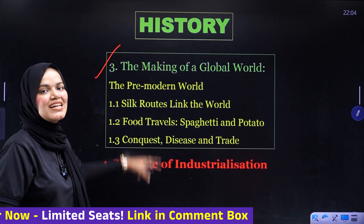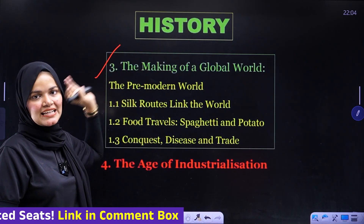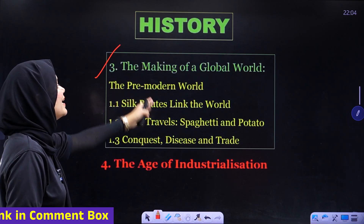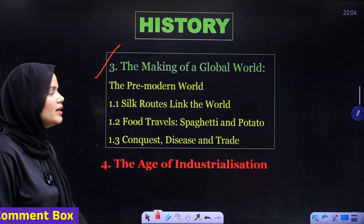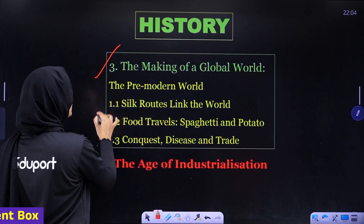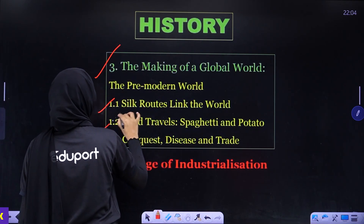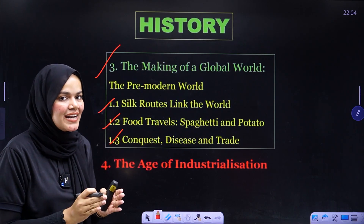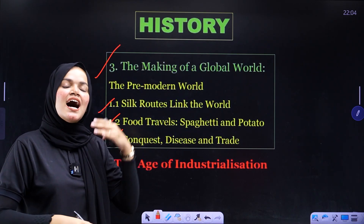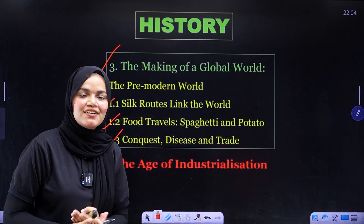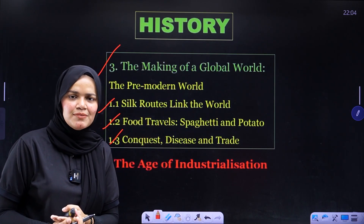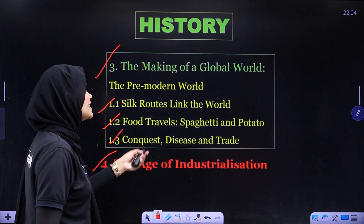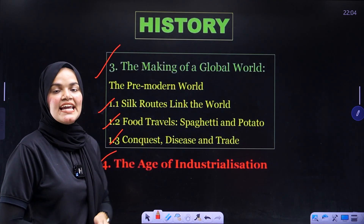In the third chapter, 'The Making of a Global World,' you only need to study these three topics marked in the green box. The rest of the topics in that chapter you can skip.